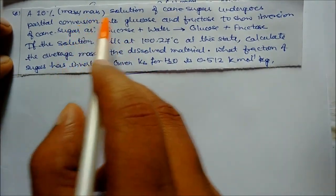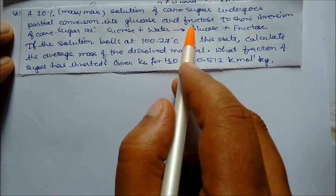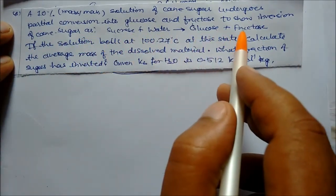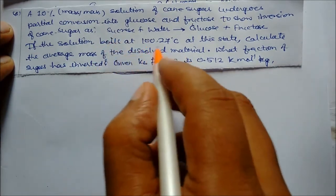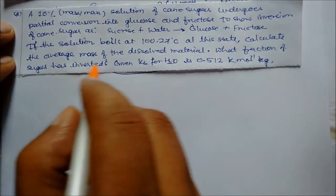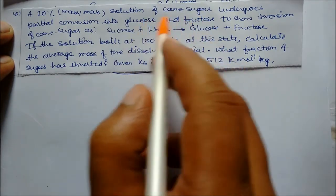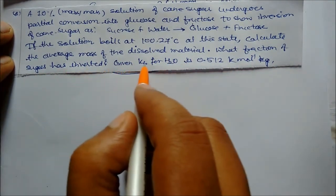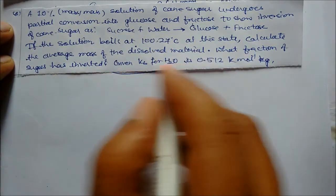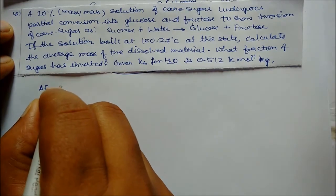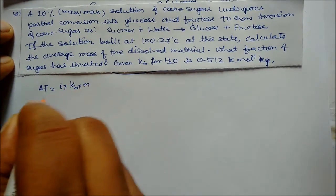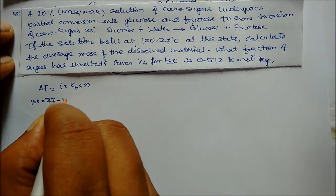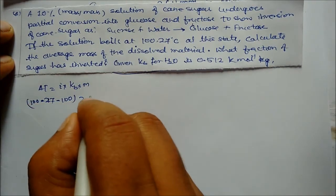Next problem: A 10% mass-by-mass solution of cane sugar undergoes partial conversion into glucose and fructose (inversion of cane sugar): sucrose + water → glucose + fructose. If the solution boils at 100.27°C, calculate the average molar mass of dissolved material and fraction of sugar inverted. Kb for water is given. Using delta T = i × Kb × m.